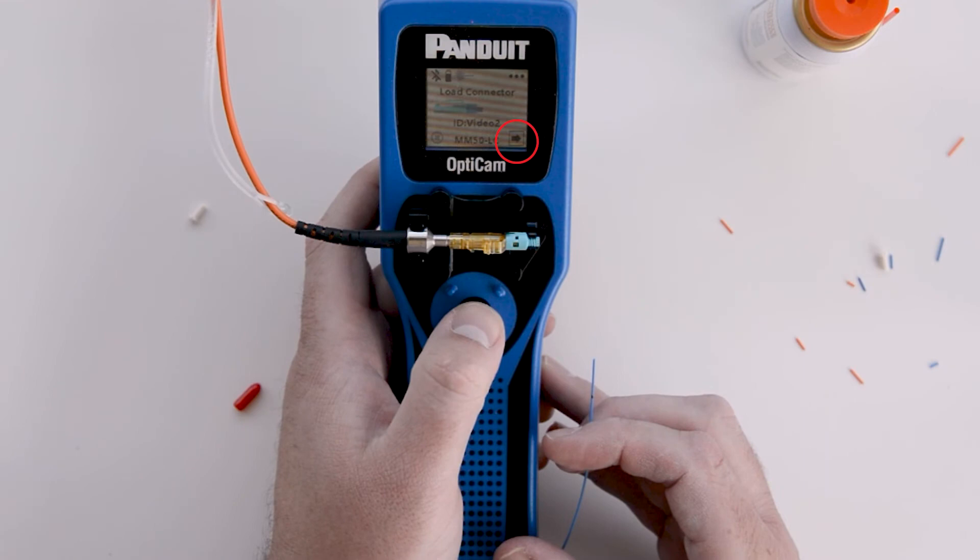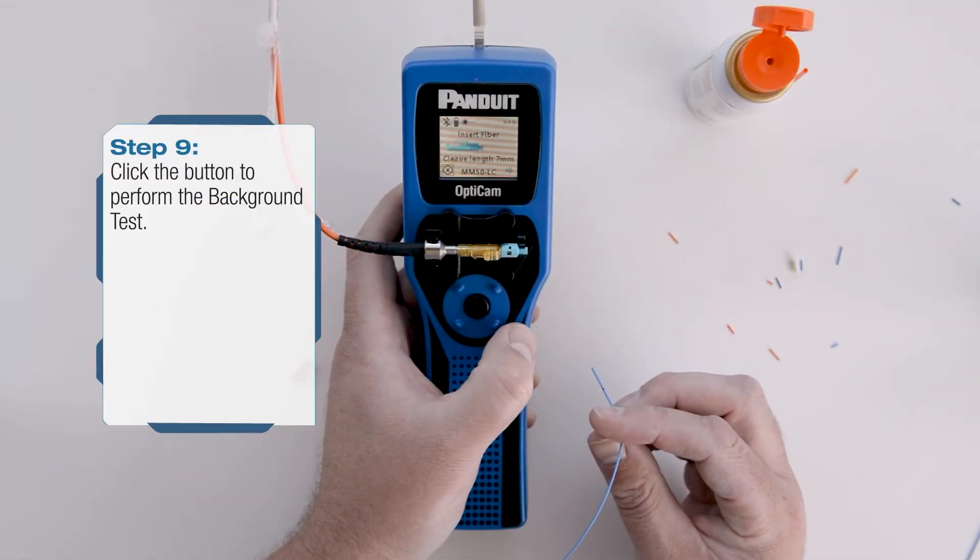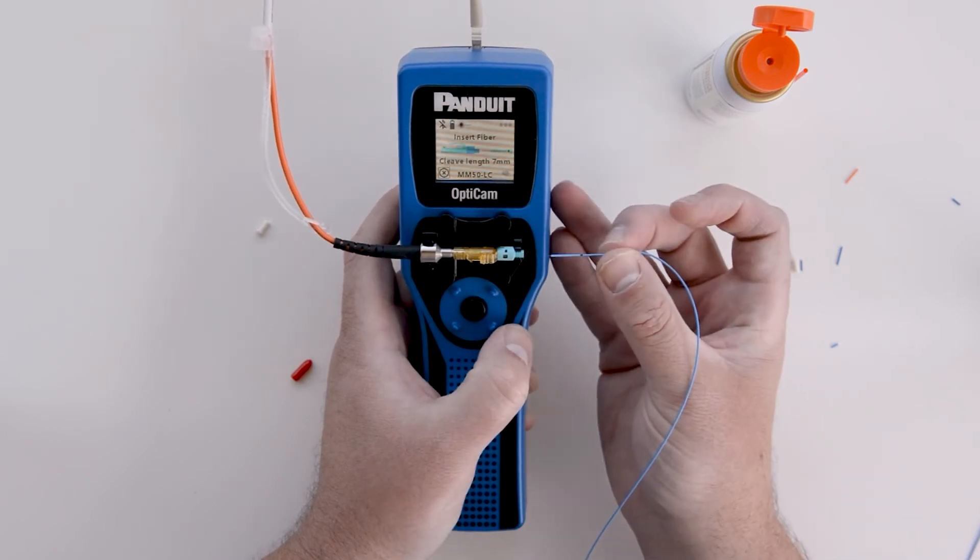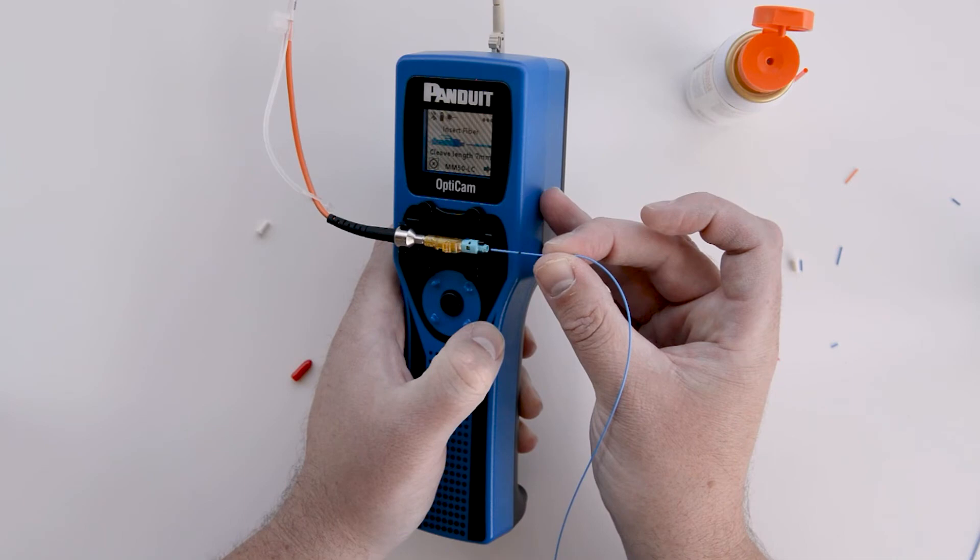With the black arrow at the bottom right of the tool's screen highlighted, click the black button on the tool to perform the background test to begin the process. After a brief moment, the tool should move to the insert fiber screen. If the tool presents a check failed message, follow the troubleshooting steps.